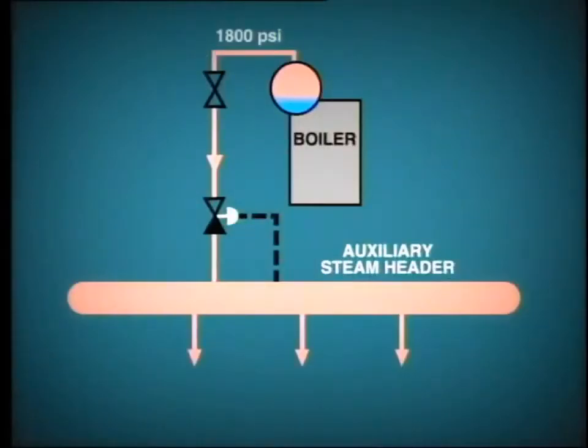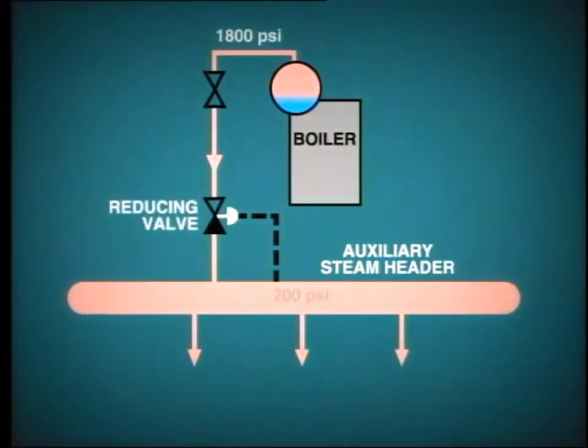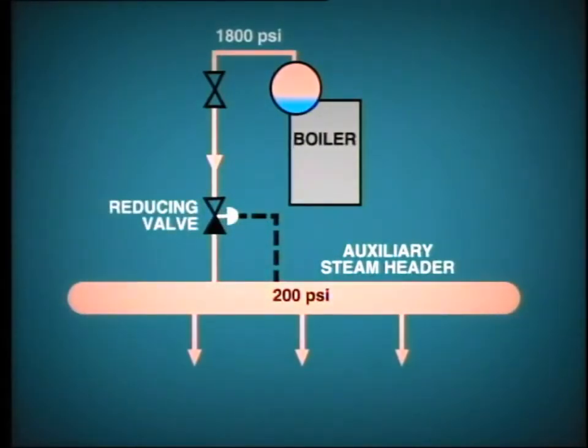So what other sources may be used to supply auxiliary steam? One common method is to use saturated steam from the boiler drum. This feeds through a reducing valve to provide steam at about 200 psi on the auxiliary steam header.